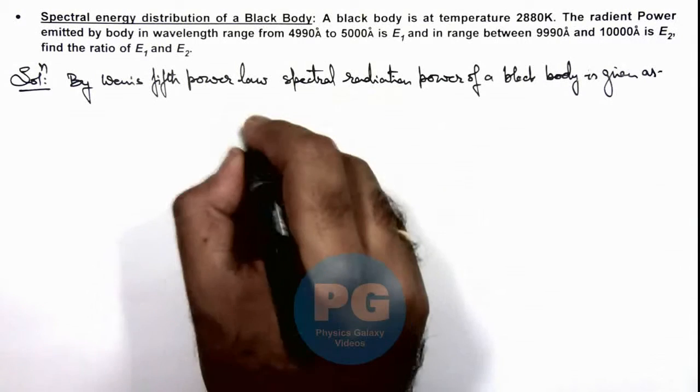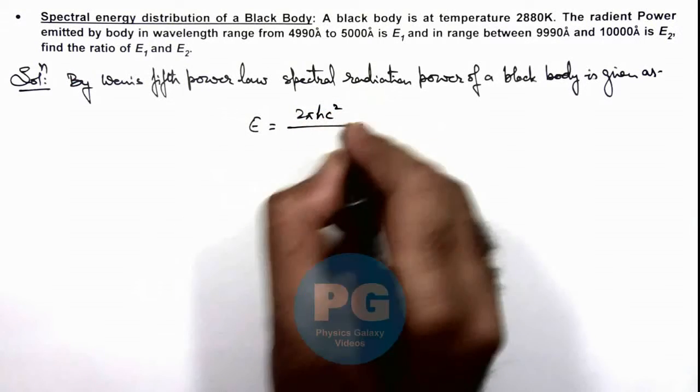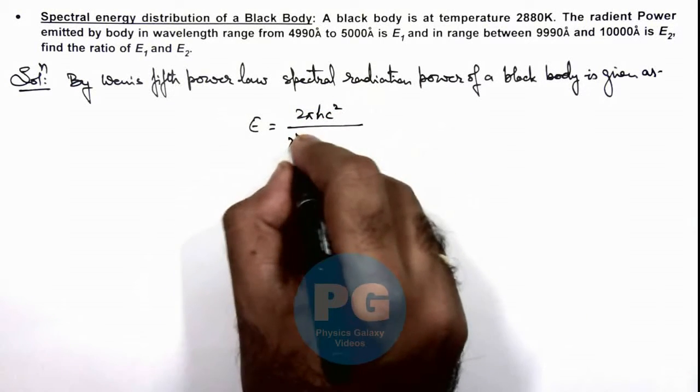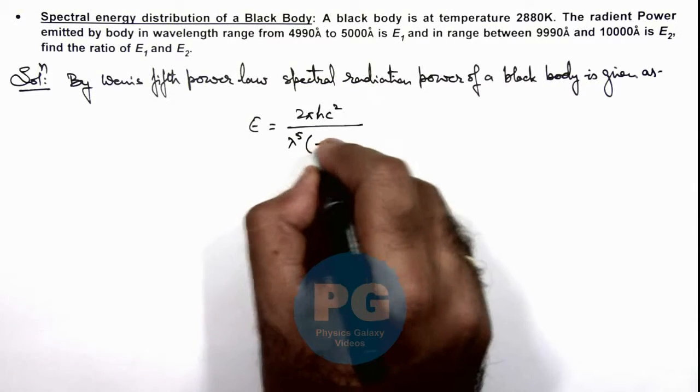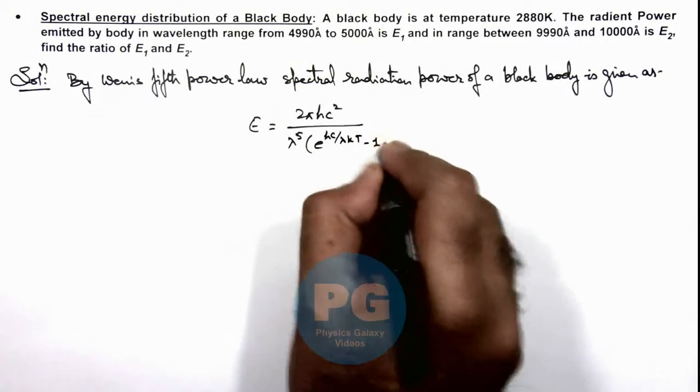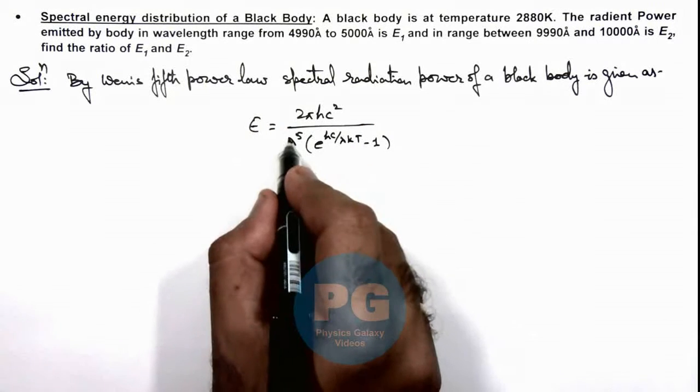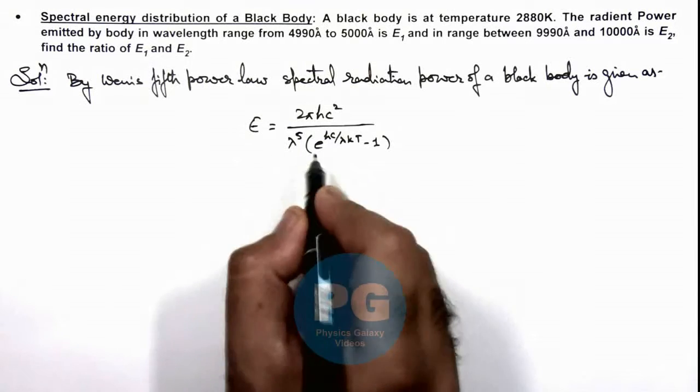Of a black body is given as E equals 2πhc² divided by λ to the power 5, multiplied by e to the power hc by λkT minus 1. This is the spectral radiation power for a wavelength λ in its short neighborhood.